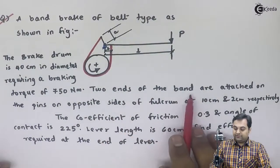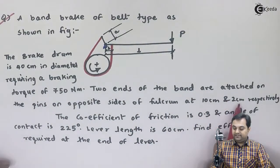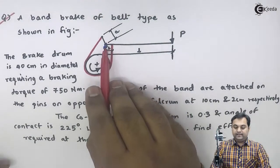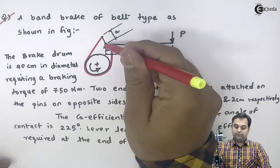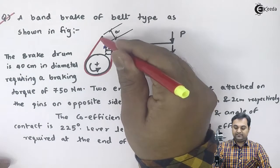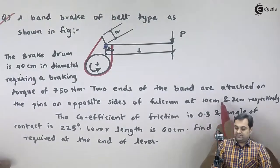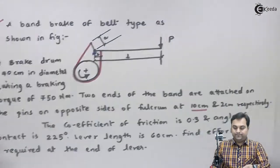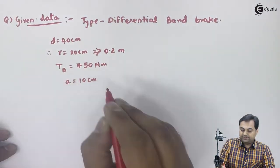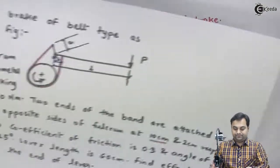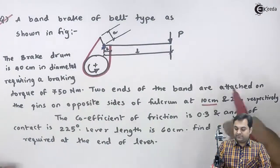Next, two ends of the band are attached on pins on opposite sides of the fulcrum at 10 cm and 2 cm respectively. In the diagram, the blue marking is the fulcrum. From the fulcrum, one end of the band is attached at a distance A which is 10 cm, and the other end B is 2 cm.